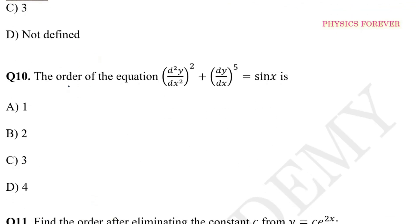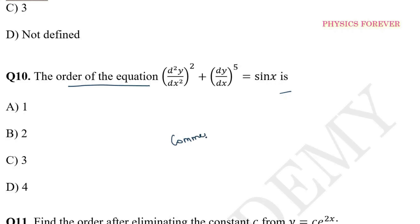The order of the equation — what is the order of this equation? We have to find out the order by eliminating the constant. First, eliminating — then we have to take log on both sides, then differentiate once. The order is 1, so the answer is 1.